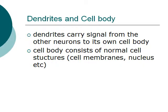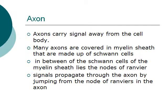Axons carry signals away from the cell body. Many axons are covered in something known as the myelin sheath, which is made up of Schwann cells. In between the Schwann cells of the myelin sheath lie the nodes of Ranvier. Signals propagate through the axon by jumping from node to node of Ranvier along the axon.